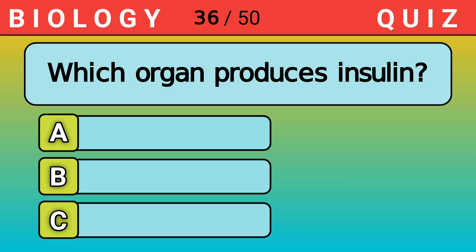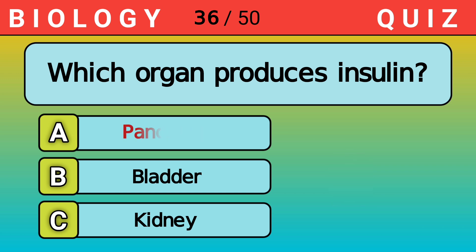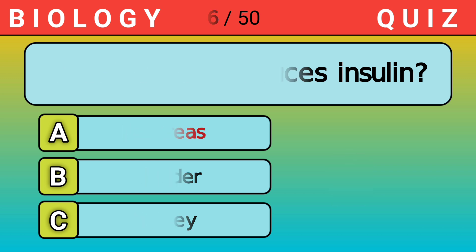Which organ produces insulin? Answer A. Pancreas.